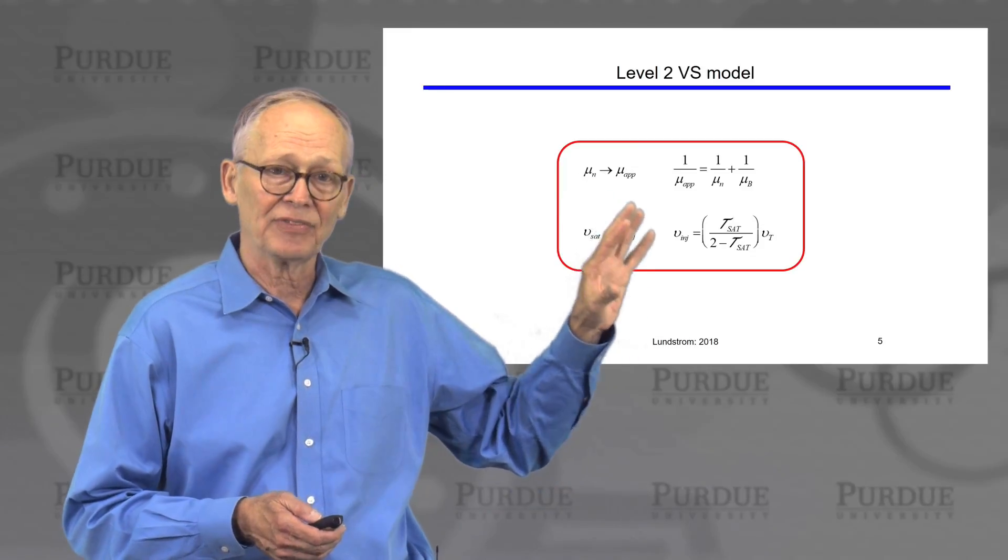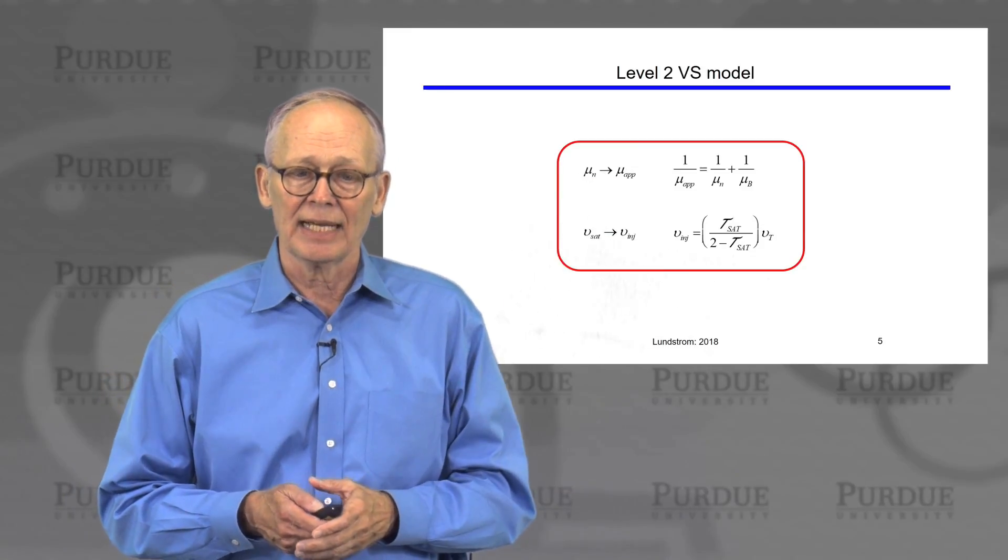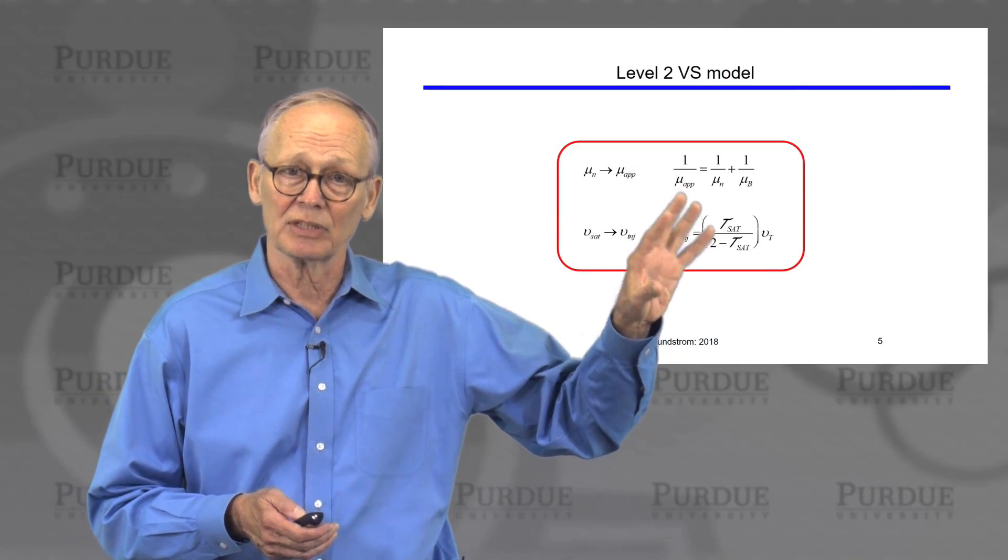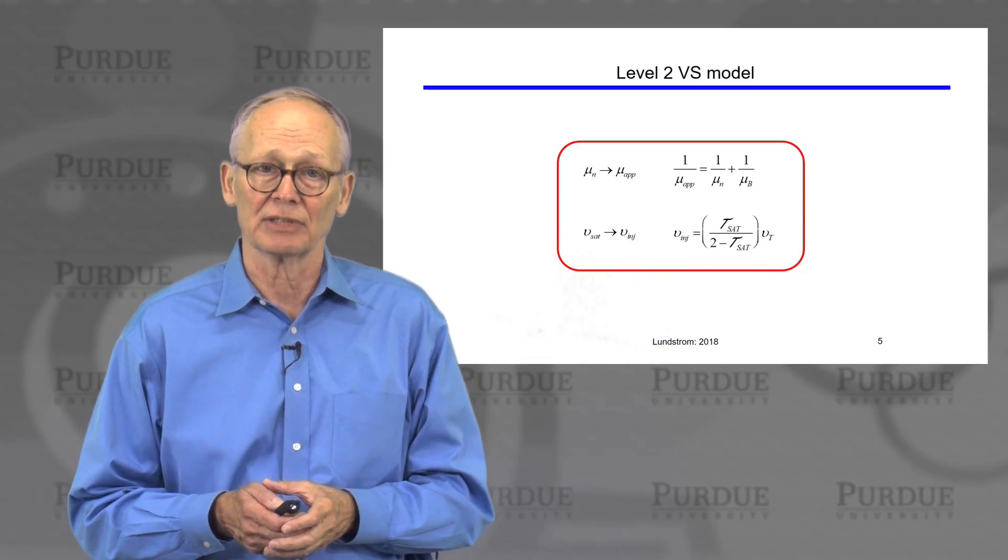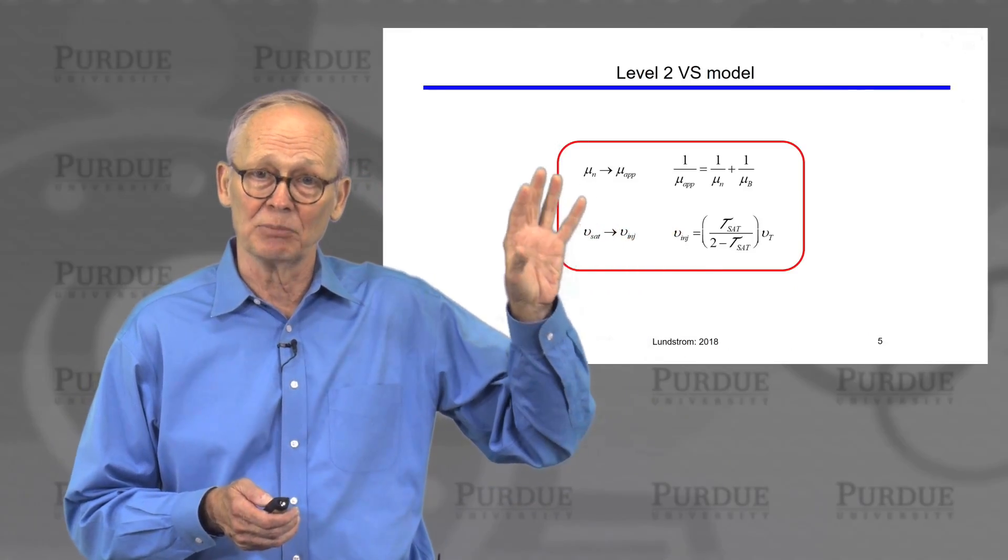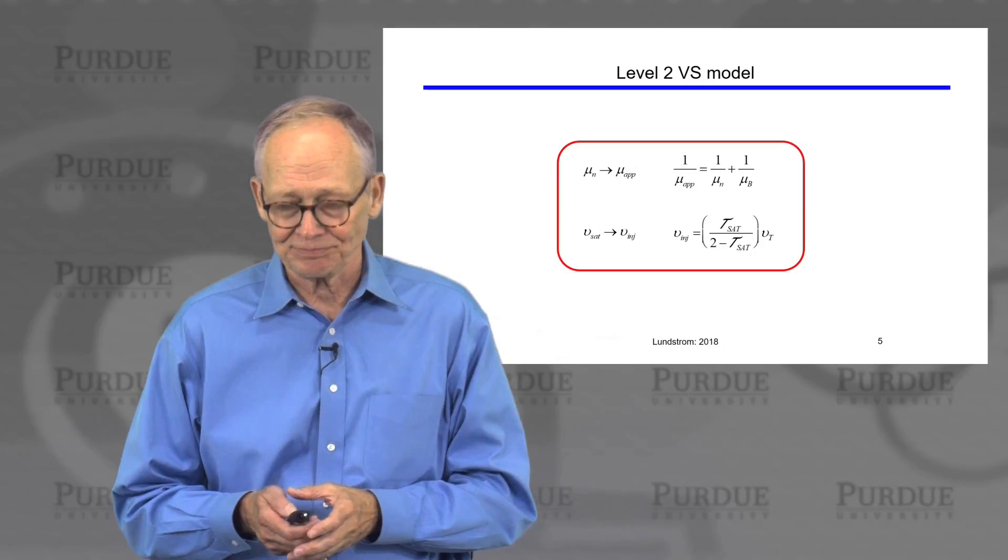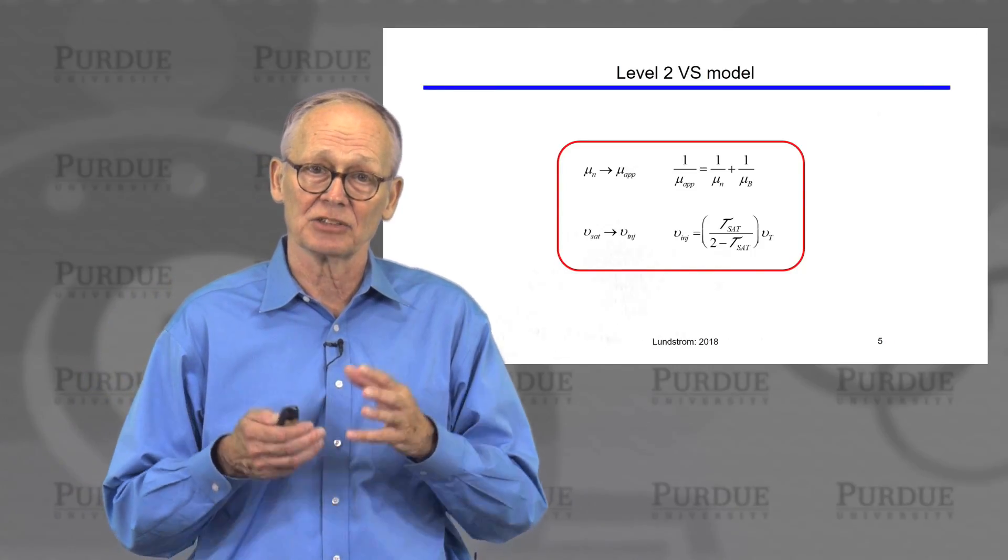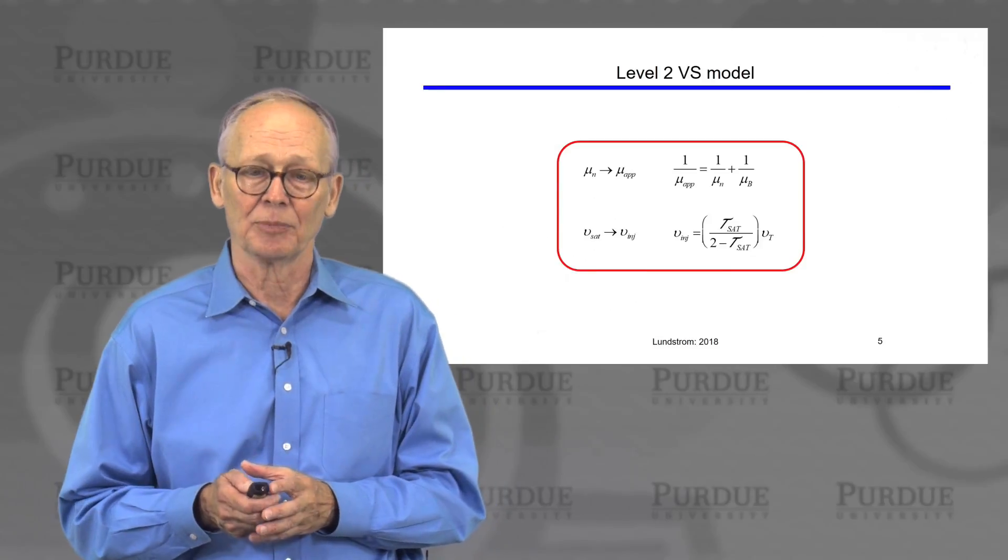We take the high field saturation velocity and we replace it by the injection velocity. The injection velocity depends on what the transmission is in the saturation regime. If the transmission is one, we approach the ballistic injection velocity. If the transmission is smaller, we achieve a smaller on current than is the upper limit possible.